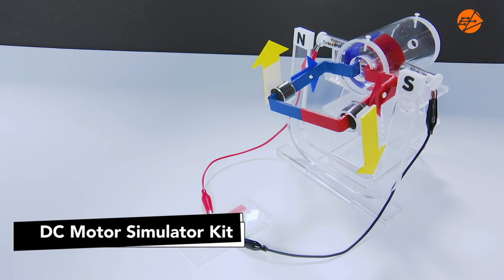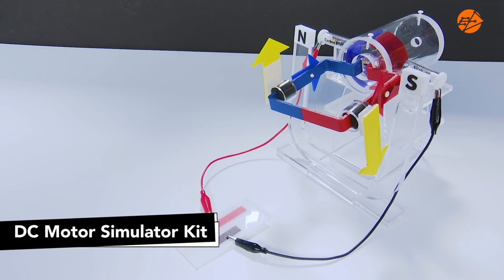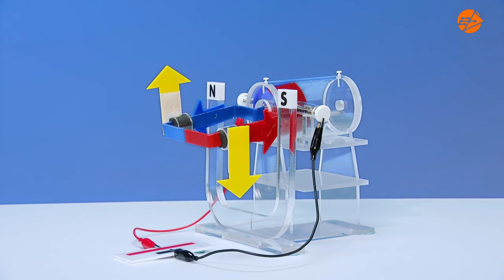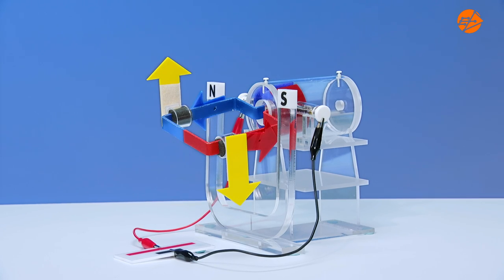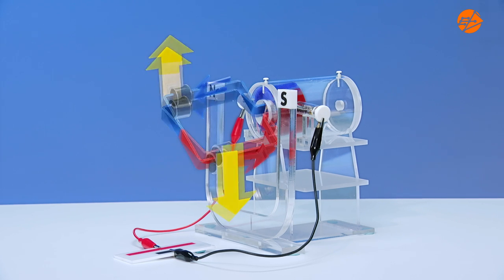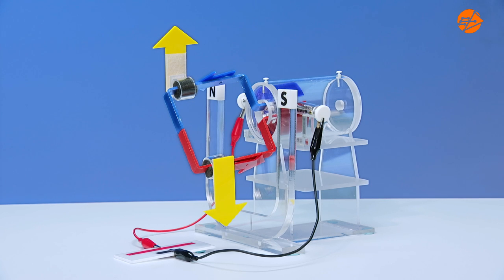We will refer to the DC motor simulator kit to understand how the split ring enables the continuous motion. The magnetic forces always act vertically upwards and vertically downwards to create a clockwise moment as the coil turns.